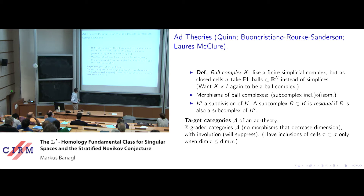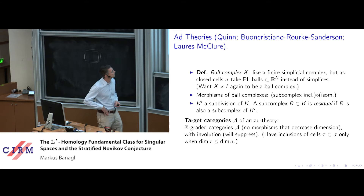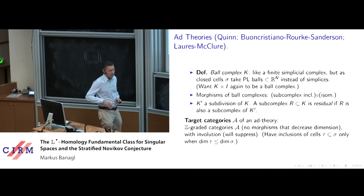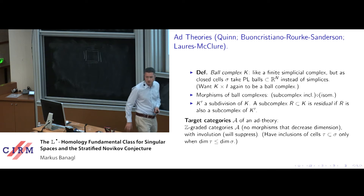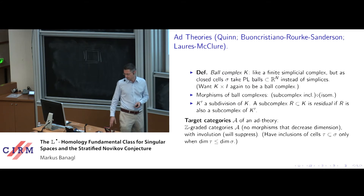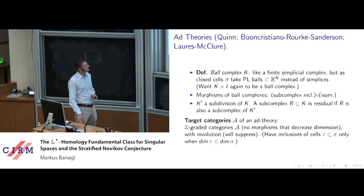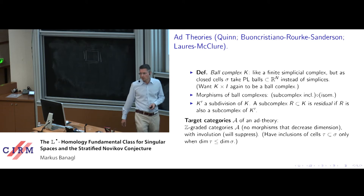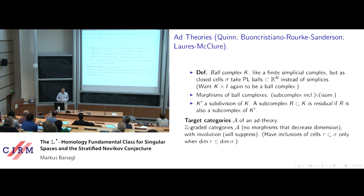Morphisms of ball complexes are isomorphisms of complexes composed with subcomplex inclusions. There is also a technical notion needed later: if K-prime is a subdivision of a ball complex K, then a subcomplex R of the original K is called residual if R is also a subcomplex of K-prime — that is, if it doesn't get refined under the subdivision.